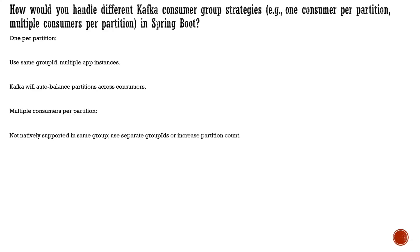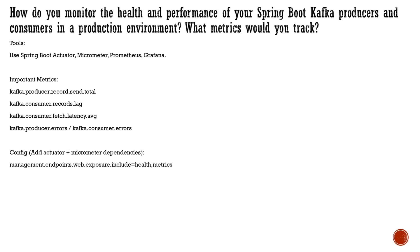How do you handle different Kafka consumer group strategies — one consumer per partition versus multiple consumers per partition? This is handled through configuration, not application code. For one consumer per partition, use the same group ID for multiple instances — Kafka will auto-balance partitions across consumers. For multiple consumers per partition, which is not natively supported within a group, you must use separate group IDs or increase the partition count on the server.